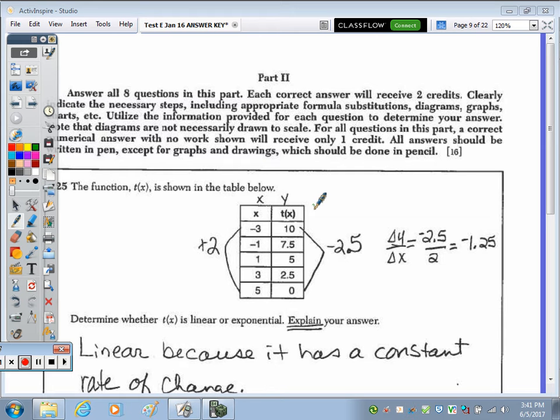Okay, in today's video we're going to take a look at the short answer questions to test E. The directions say answer all eight questions in this part. The correct answer will receive two credits. Clearly indicate all necessary steps, including appropriate formula substitutions, diagrams, graphs, charts, etc. For all questions in this part, a correct numerical answer with no work receives only one credit. All answers should be written in pen except for your graphs and drawings, which should be done in pencil.